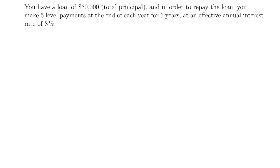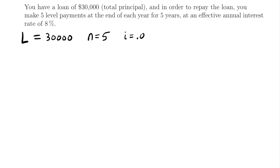Consider the scenario where you have a loan of $30,000 — that is your total principal. In order to repay this loan, you are going to make five level payments at the end of each year for five years at an effective annual interest rate of 8%. We can already write down some values: L equals $30,000, N equals five, and I equals 0.08. However, we don't know what the payment amount K is yet, but we can figure that out.